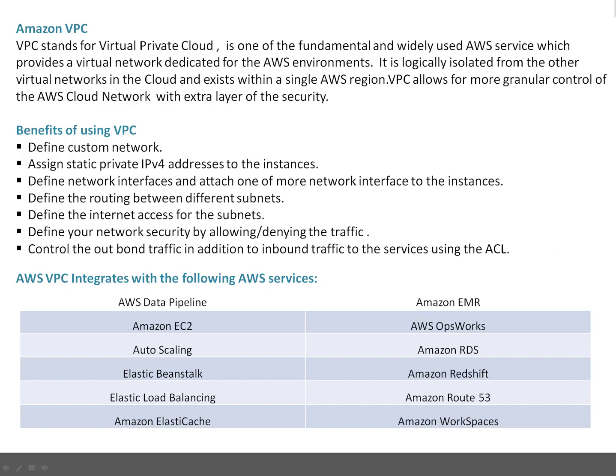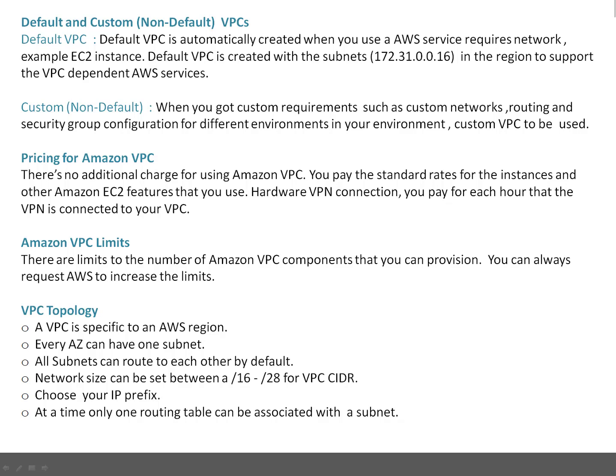There are two types of VPCs: the first is Default VPC and the second is Custom or Non-Default VPC. The Default VPC is automatically created when you create your account or start using some Amazon services. It is always created with the subnet 172.31.0.0/16 in the region. With the Default VPC, three subnets are automatically created if the region has three availability zones.